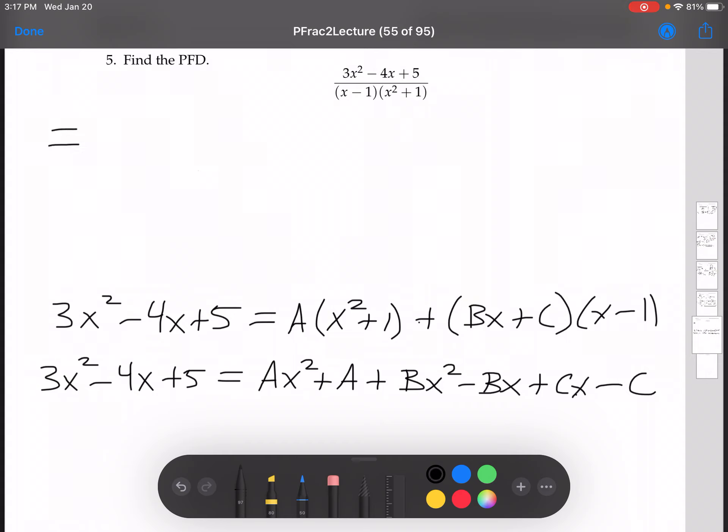Now collecting coefficients, going back to the top. We have 3x squared minus 4x plus 5 on the left-hand side. Collecting coefficients, the x squareds go together to give us a plus b times x squared. The things with just x go together: negative b plus c times x. And the things with no x's go together: plus a minus c.